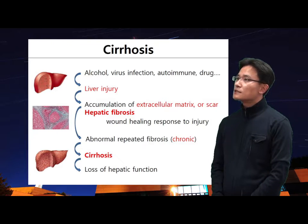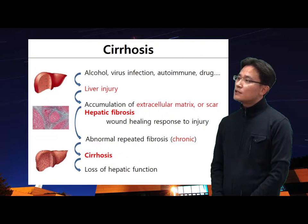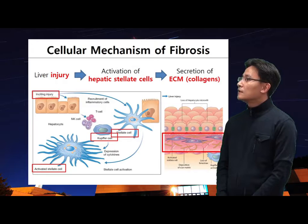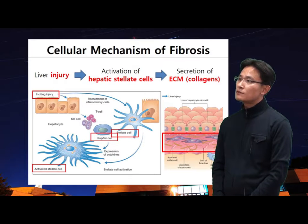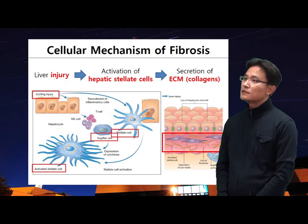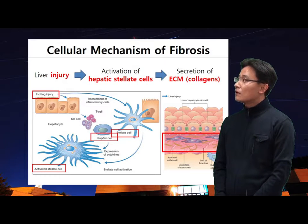Scar tissue from cirrhosis is unable to perform normal hepatic function. Once cirrhosis has developed, serious complications may occur, including liver failure and liver cancer. Liver injury activates hepatic stellate cells and Kupffer cells; stellate cell activation is a key pathogenic feature underlying liver fibrosis and cirrhosis. Activated hepatic stellate cells produce large amounts of extracellular matrix collagen fibers and many cytokine mediators. The interaction between hepatic stellate cells and immune cells in the liver is related to the progression of liver fibrosis.